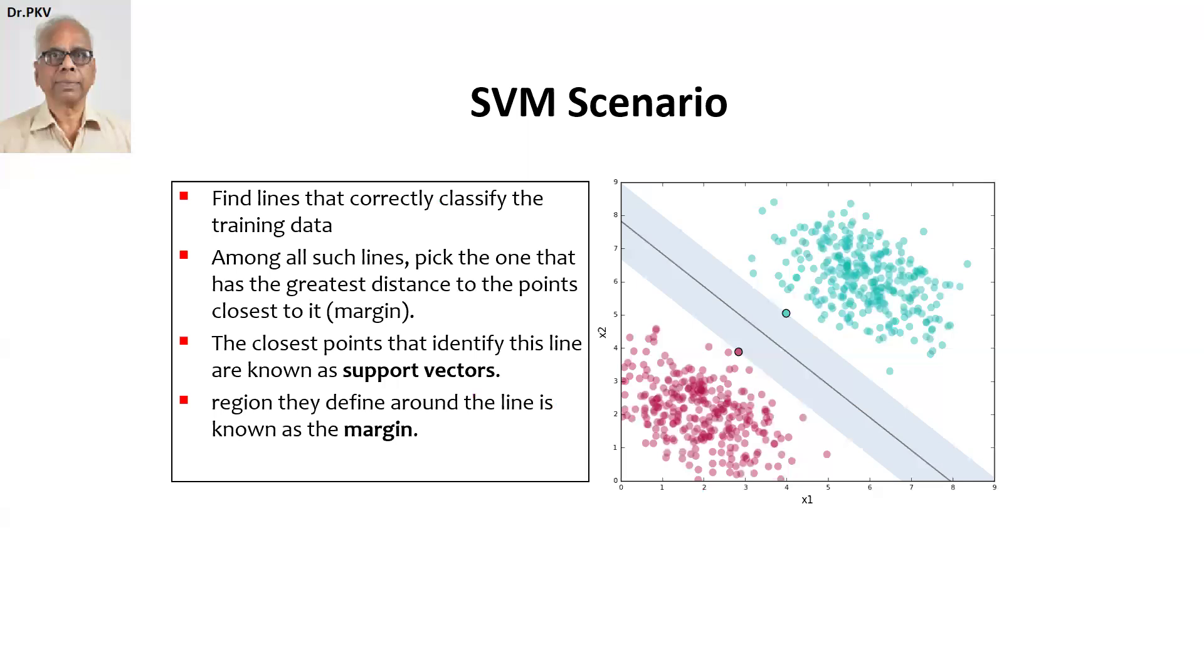What is the SVM scenario? Finding lines that correctly classify the training data. You can see here there is a line which is called the hyperplane and these are some data points. These are data points belonging to one group. This is a set of data points belonging to another group. So you will have to find the best line that separates the two groups as sharply as possible.